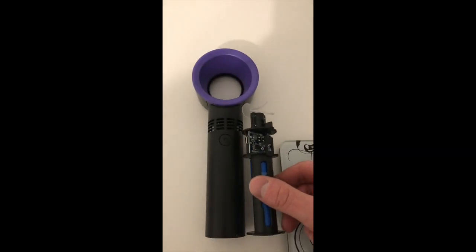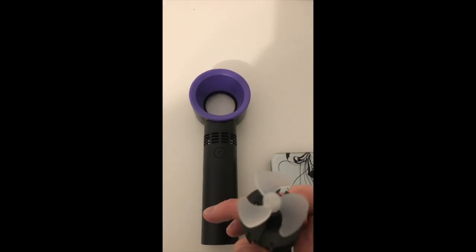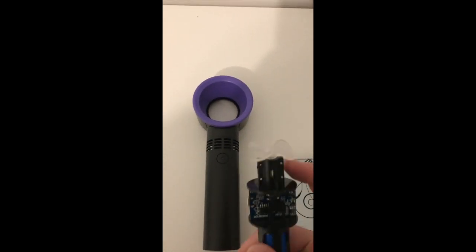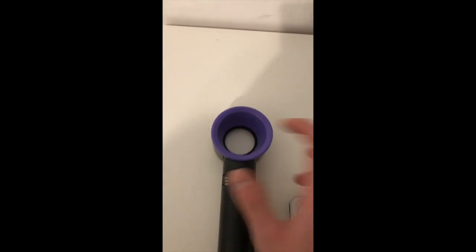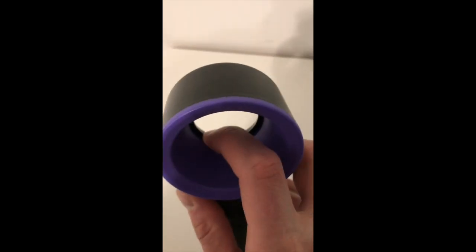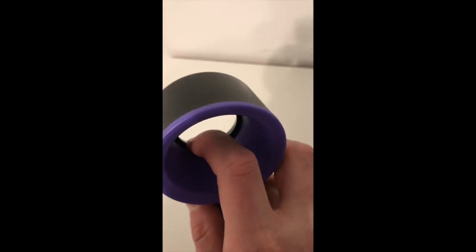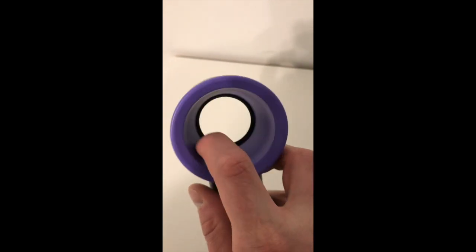What it does is it sits here and pushes air with this propeller through a narrow slit. So air comes out of this ring.